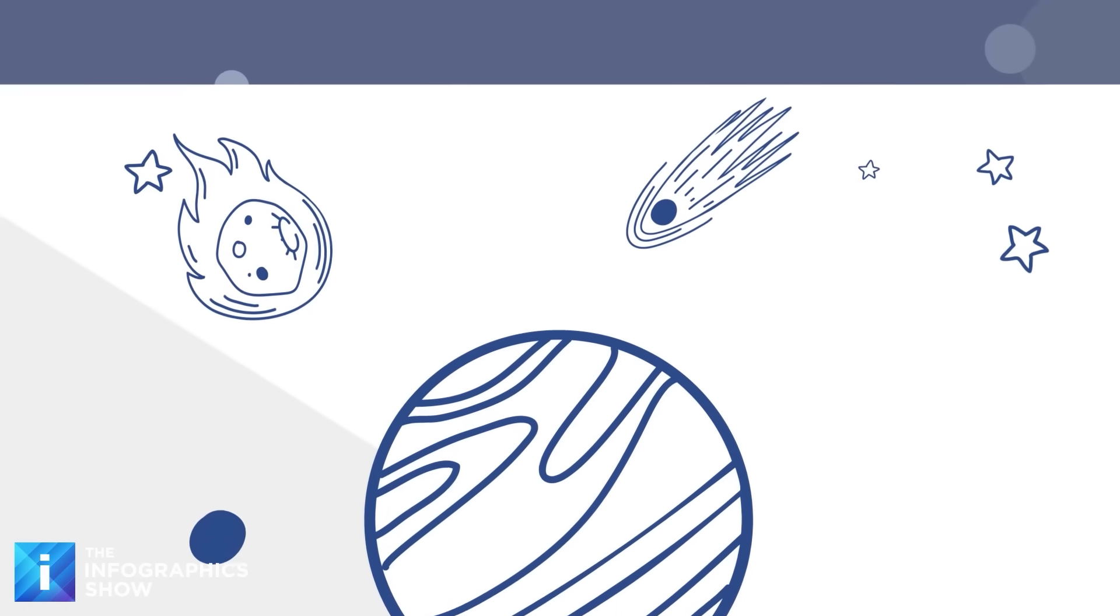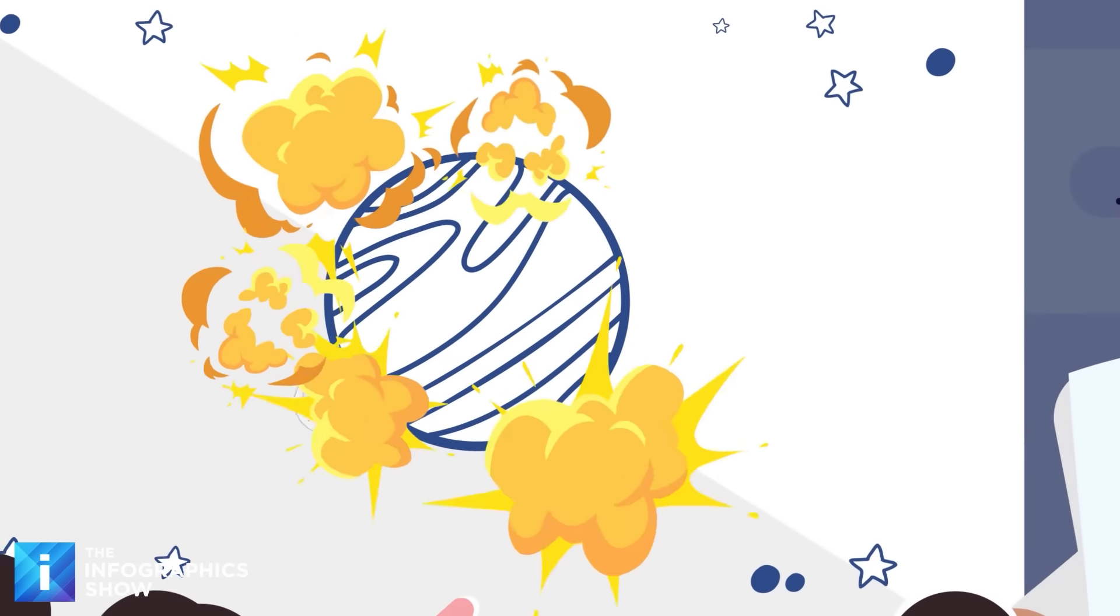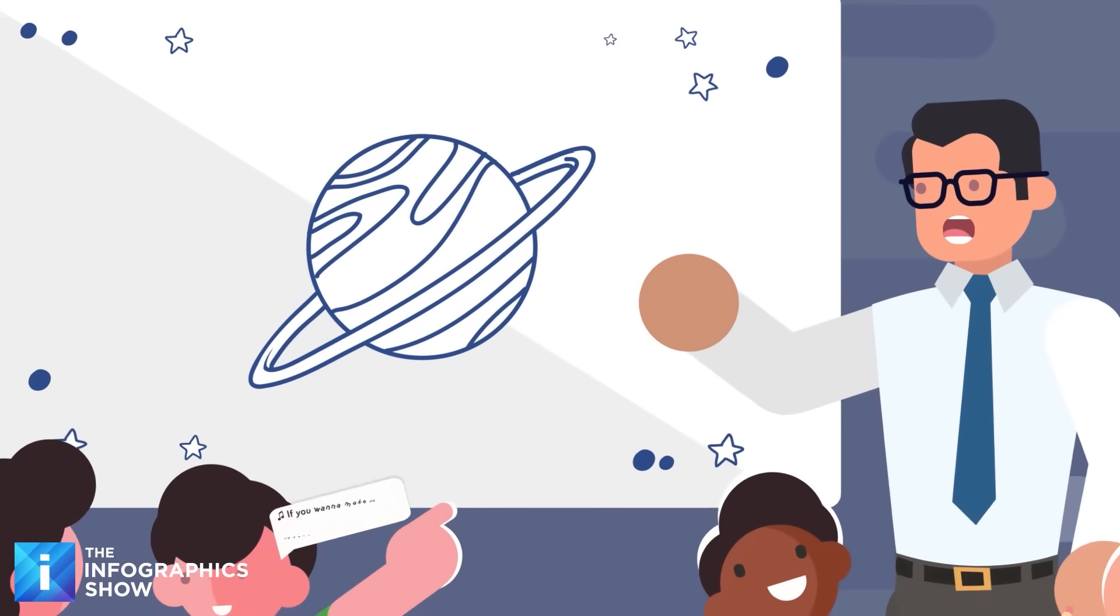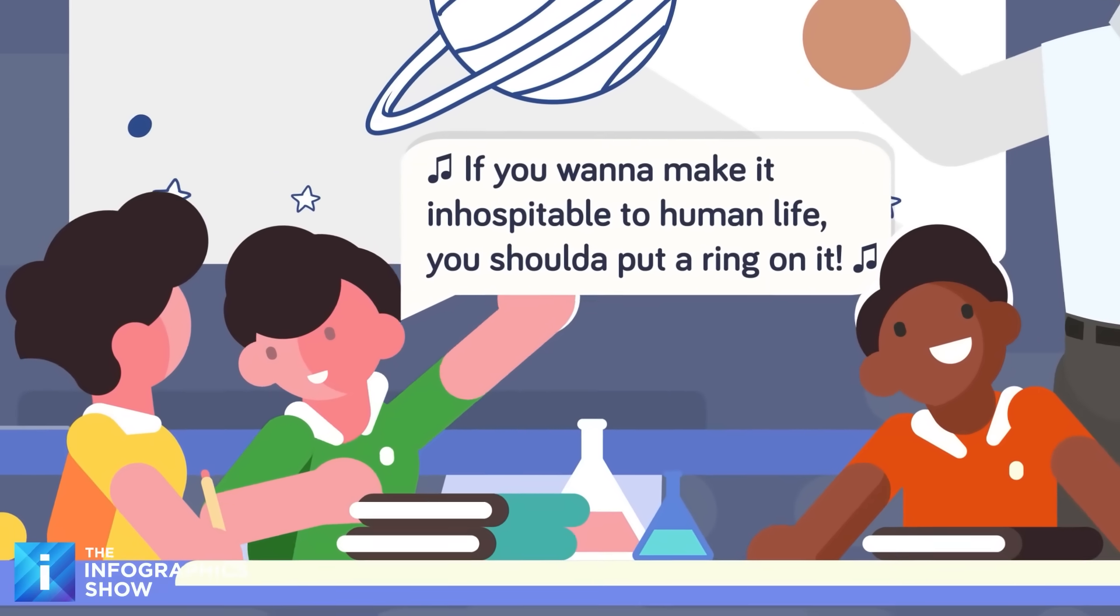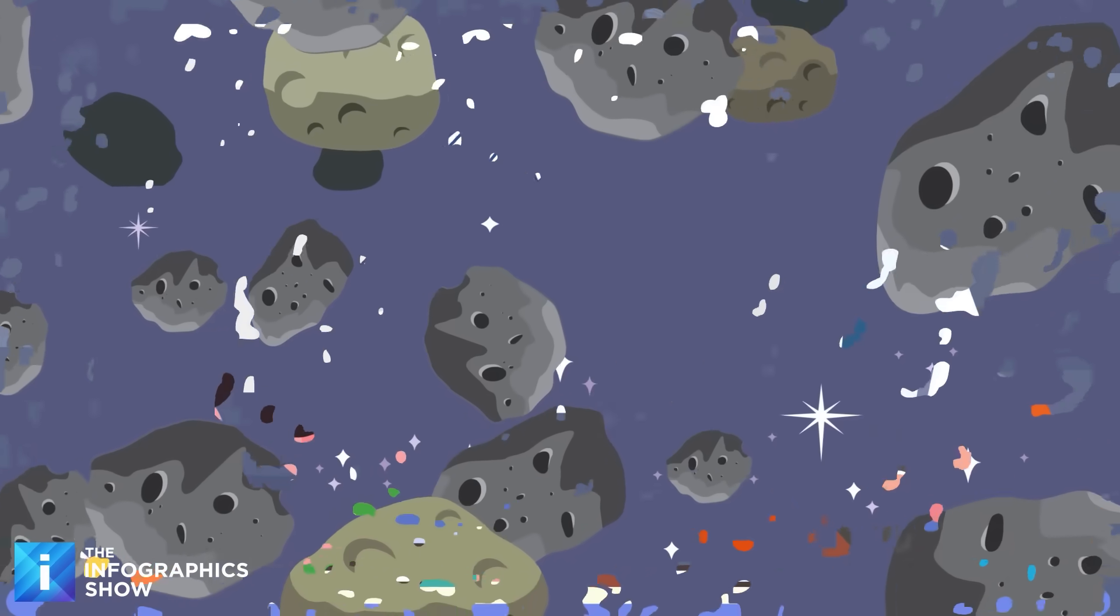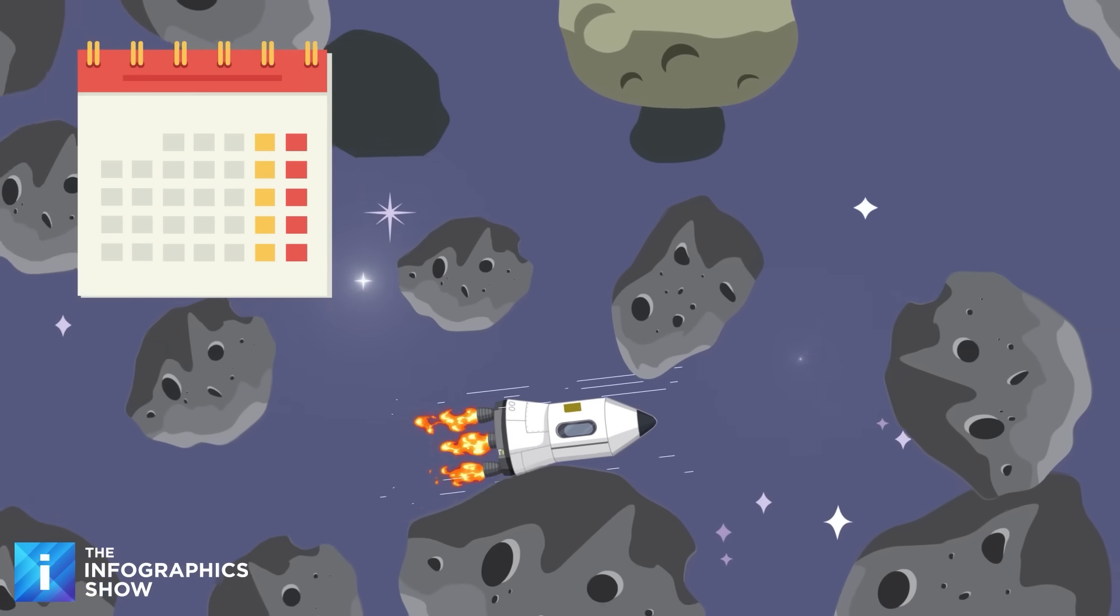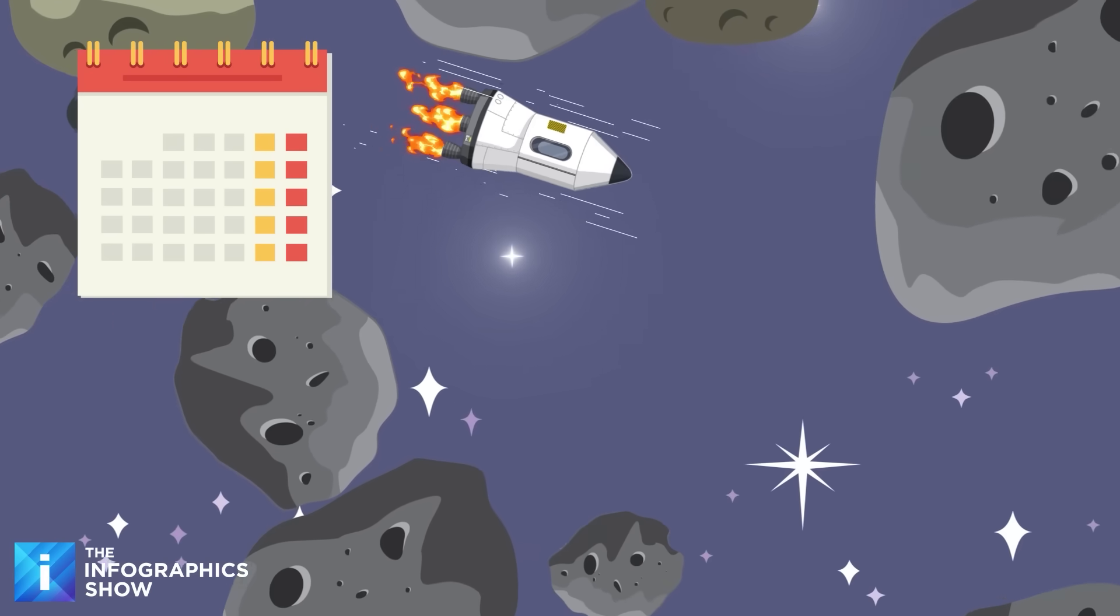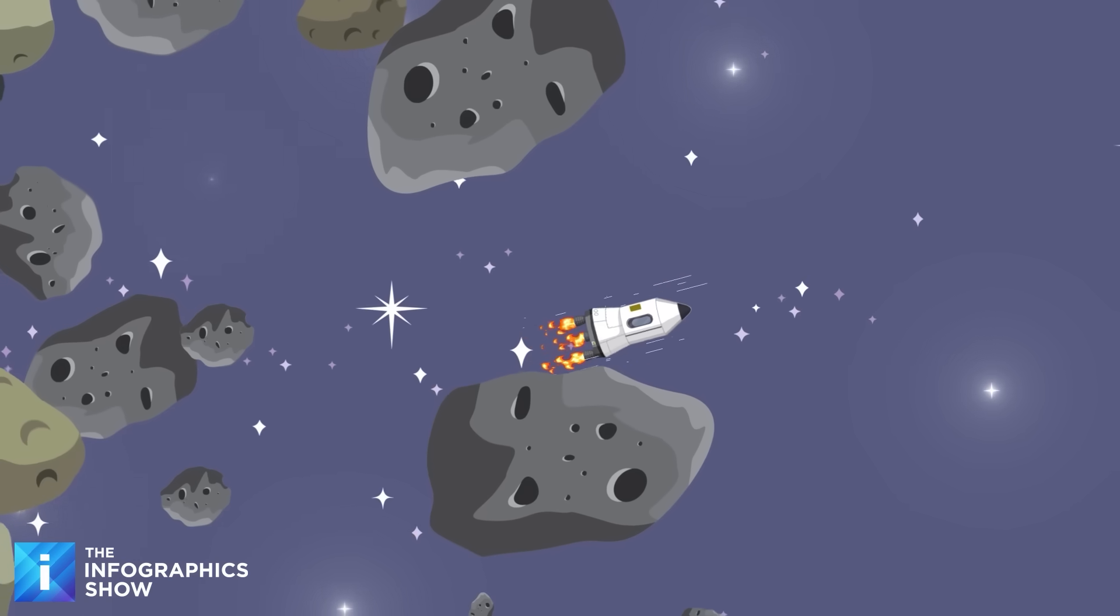Saturn's rings are thought to be pieces of comets, asteroids, or shattered moons that broke up before they reached the planet. They were torn apart by Saturn's powerful gravity. They're made of billions of small chunks of ice and rock, coated with other materials such as dust, ranging from tiny dust-sized icy grains to chunks as big as a house or even a mountain. Saturn's ring system extends up to 175,000 miles from the planet, so it would take your spaceship months, if not even years, just to travel through them. That is, if hypothetically the advanced materials and navigation systems needed for the trip were developed.